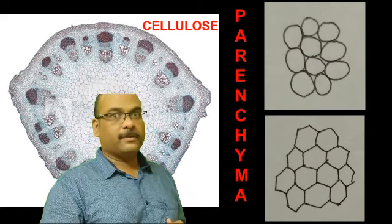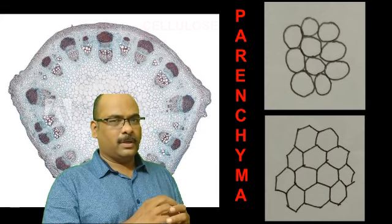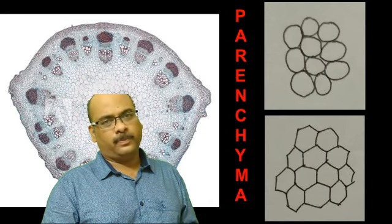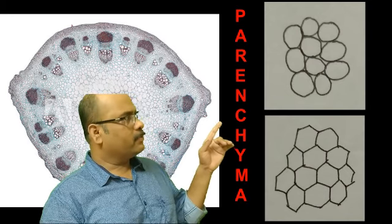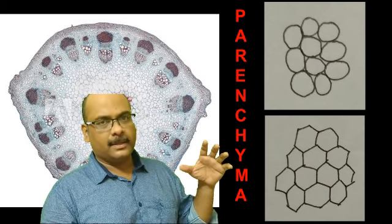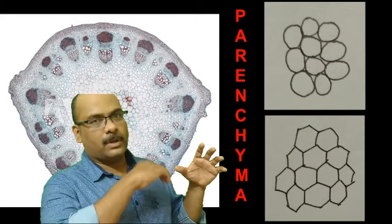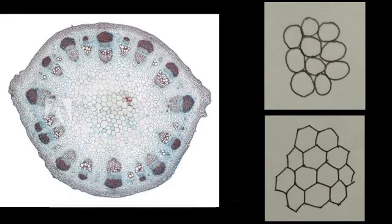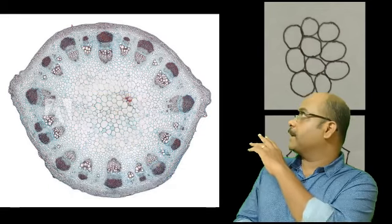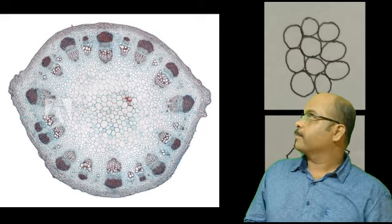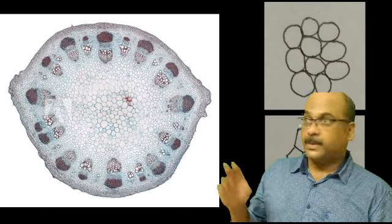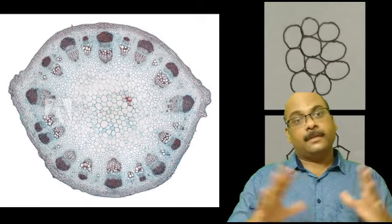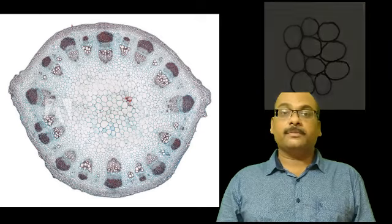And fourth one, what is their function? They store food, and they give mechanical support also. This is actually the view from the upper side. So it looks circular, or oval, or polygonal shape. Now the last point, where they are seen? In this diagram, you can see parenchyma are mainly present in the center. And you can see lot of parenchyma there. So we can say that they are the abundant tissue in plants.